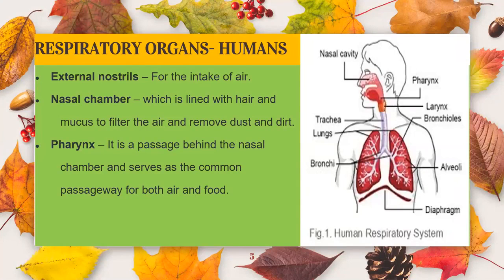Let's study about these organs one by one. The nose possesses a couple of external nostrils which are divided by a cartilaginous wall called the septum. Normally we take in air through our nostrils. When we inhale air, it passes through our nostrils into the nasal cavity or nasal chamber. The nasal chamber is lined with hair and mucus to filter the air and remove dust and dirt. Tiny hairs cover the interior lining of nostrils which prevent the entry of foreign particles, so clean and filtered air enters the lungs.